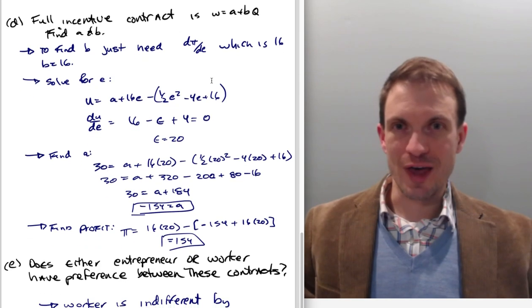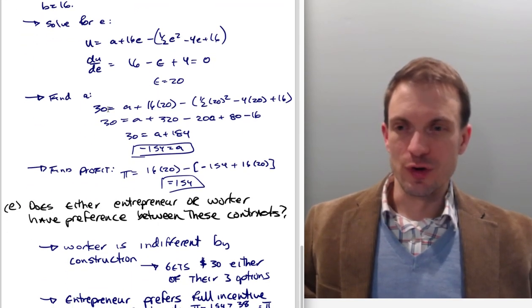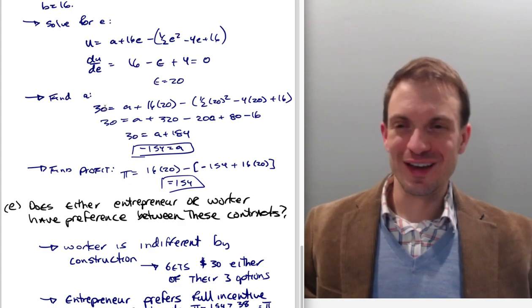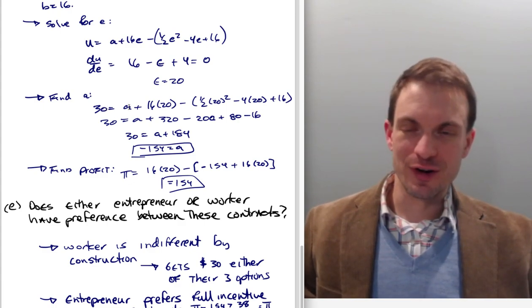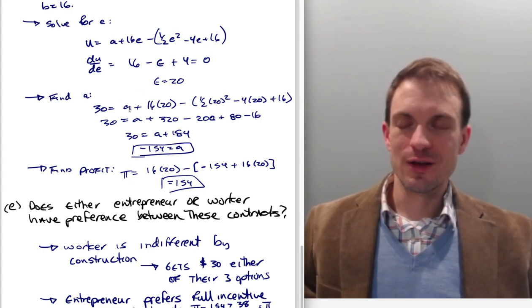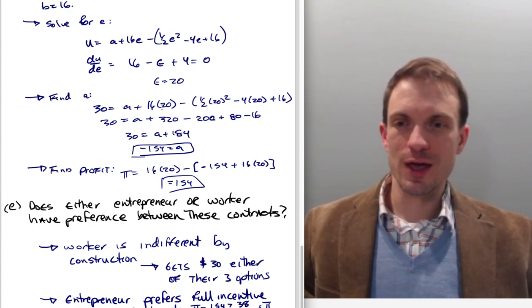So here's their outside option, 30. So 30 on the left-hand side is just their outside option. The right-hand side is their utility function. Well, is the utility which is generated from the wage minus the effort cost function. So A + 320 - 200, this is 400 divided by 2 is 200. Here's 4 times 20 is 80.